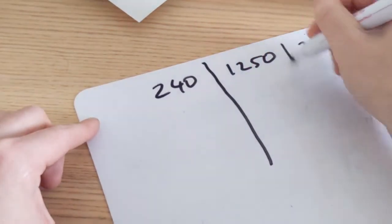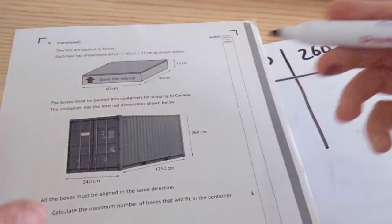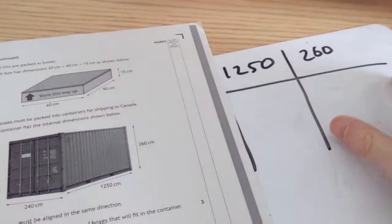And again, just draw a little table. Probably don't need that much room. Then what we're going to do is look at the dimensions of our boxes. So it's 60, 40, 15. The 15 is the one that has to go alongside the 260 because it has to be that way up.